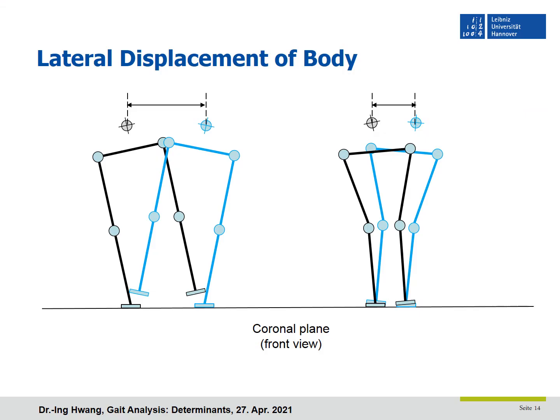The sixth determinant is lateral displacement of the body. The above five gait determinants are movements to reduce the excursion of the center of gravity. The sixth one is about side-to-side movement. If the gait width is larger, the center of mass moves more in the lateral direction, like the left image. If the gait width is smaller, the lateral movement is reduced.